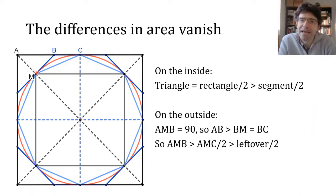So again, we see that the outer leftovers decrease by a factor of more than two each time, so faster than the series one, a half, a quarter, an eighth, and so on.